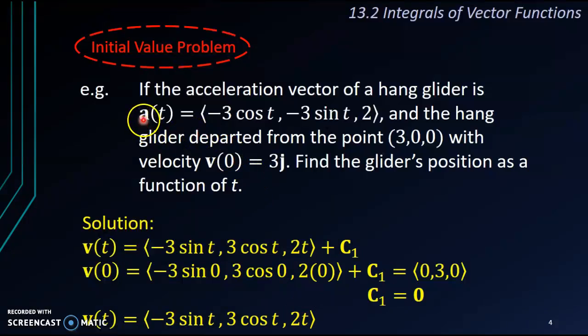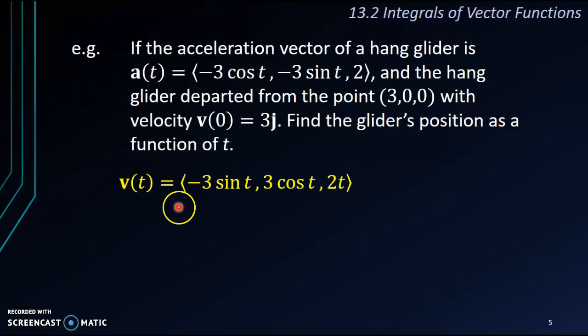So from acceleration, we have already obtained the velocity. Next, we want to get the r, the position vector. So I'll just copy this vector from the previous slide. This is the vector.